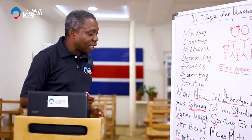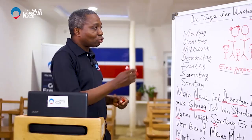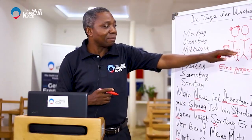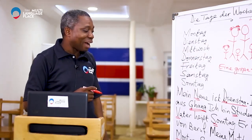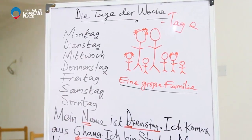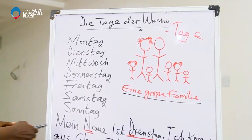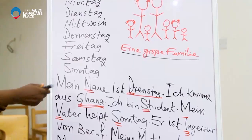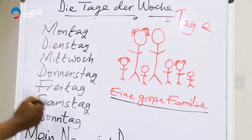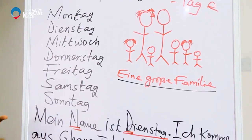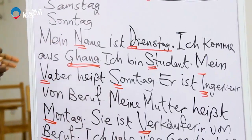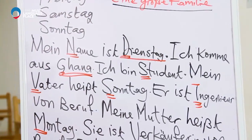We see the family up there. I want us to do this together — you see different names there. We give the names to the members of the family. My name is Dienstag. So we locate Dienstag. Ich komme aus Ghana — I come from Ghana. My name is Tuesday.